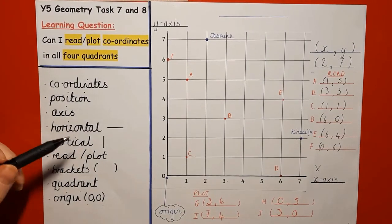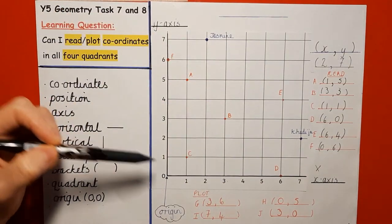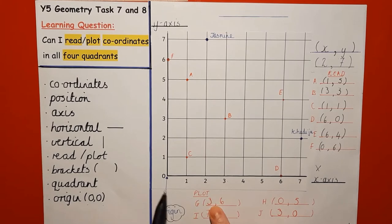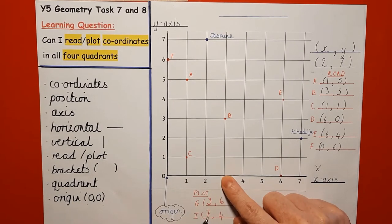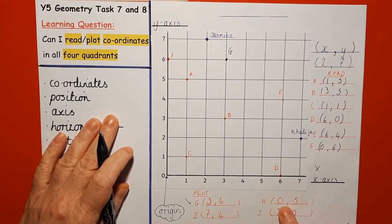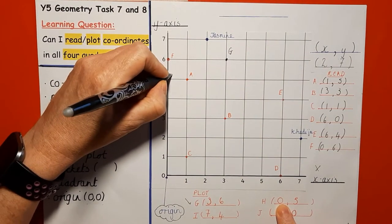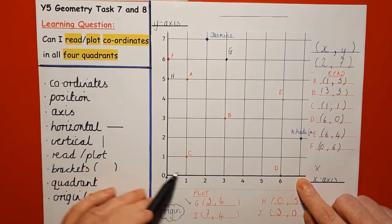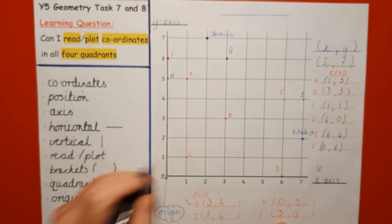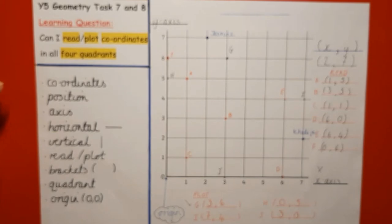Now I'm going to show you how to plot some coordinates. Pause the video and have a go if you'd like. G is (3, 6) — three across and six up, so it goes there. H is (0, 5) — zero across and five up, so H goes there. I is seven across and four up, so I goes there. J is three across and zero up, so J goes there. That's a quick revision of coordinates from Year 4, and now we're going to extend this.